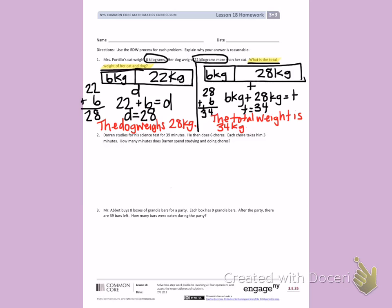Number 2. Darren studies for his science test for 39 minutes. He then does 6 chores. Each chore takes him 3 minutes. How many minutes does Darren spend studying and doing chores? I know he spends 39 minutes studying. But he is also doing 6 chores. Each of his chores take 3 minutes. Get out that highlighter again. How many minutes does Darren spend studying and doing chores? I need to figure out how many minutes he does doing chores.